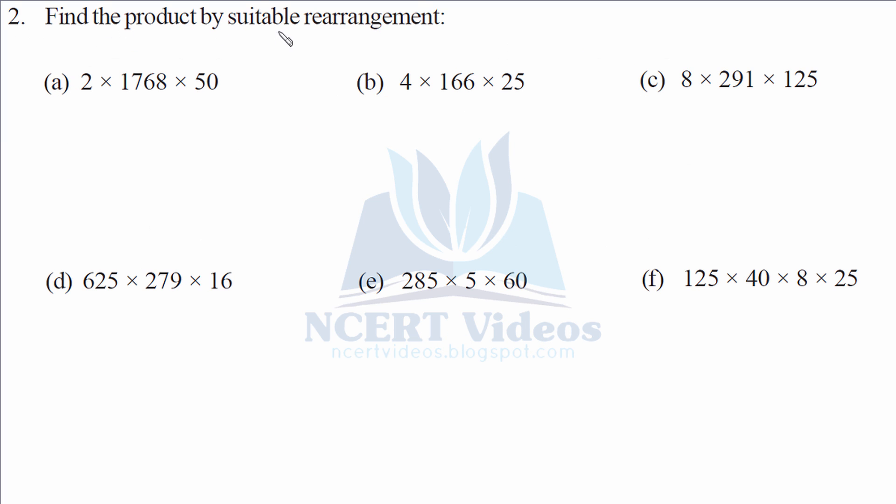Question 2. Find the product by suitable rearrangement. Again, the same process but in case of multiplication instead of addition. So 2×50 is 100, it is very simple, into 1768. Now using our old trick, that is, we will just place 00s and write rest of the number as it is. So it gives us 176800.